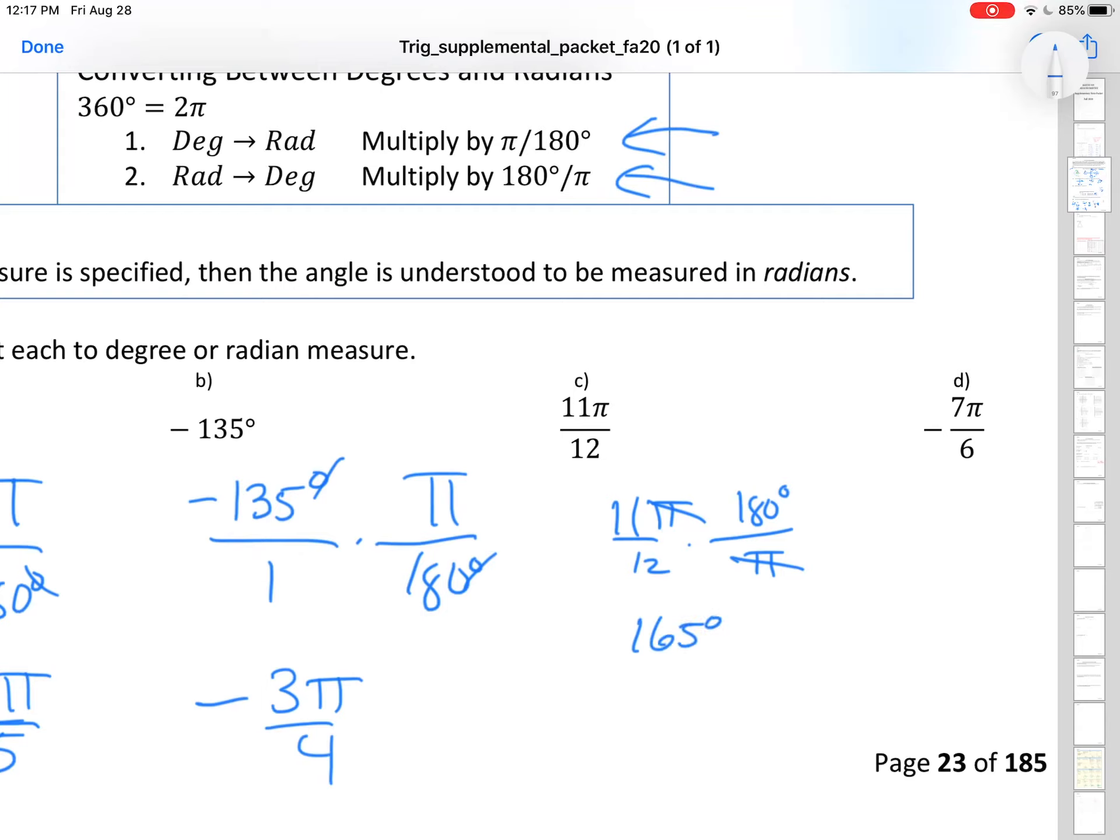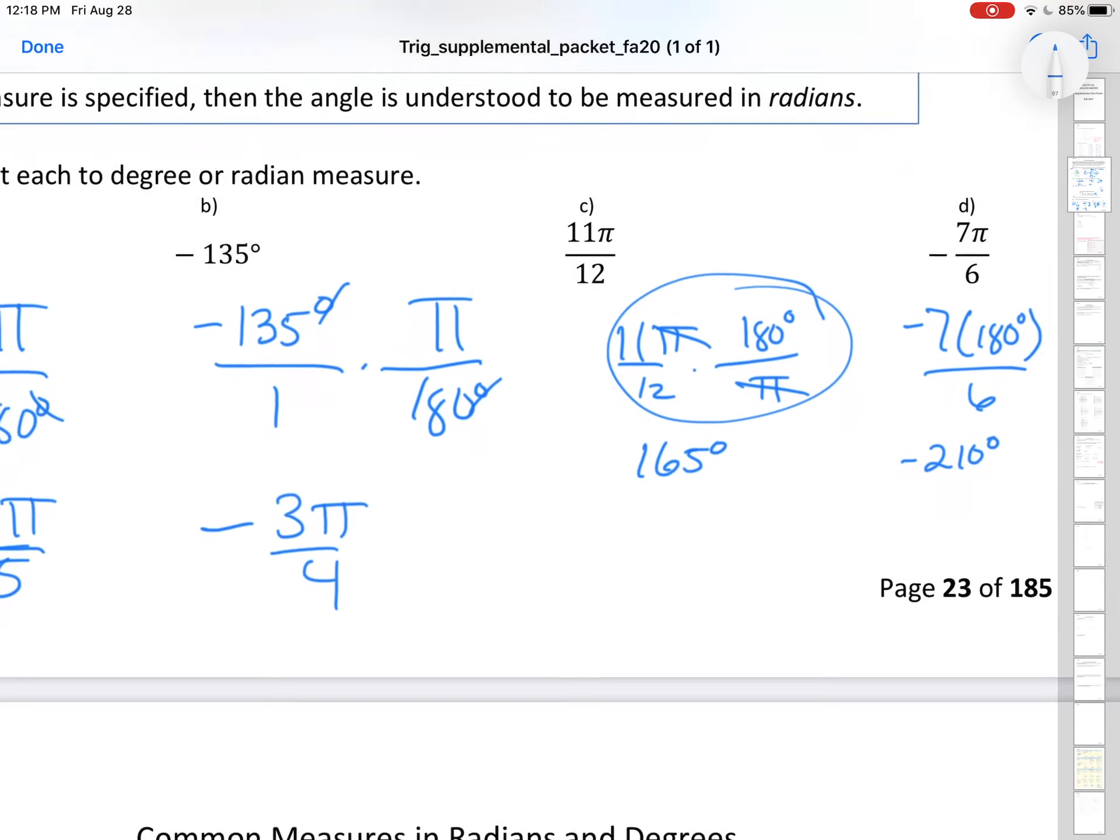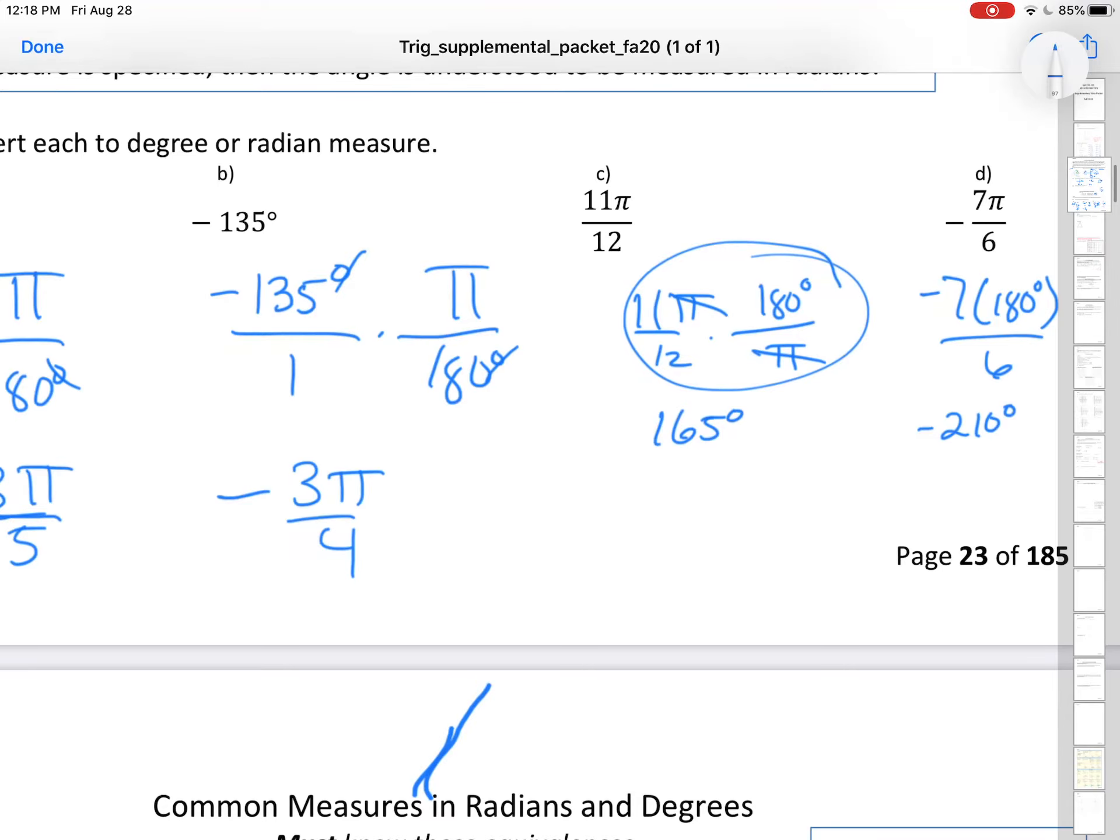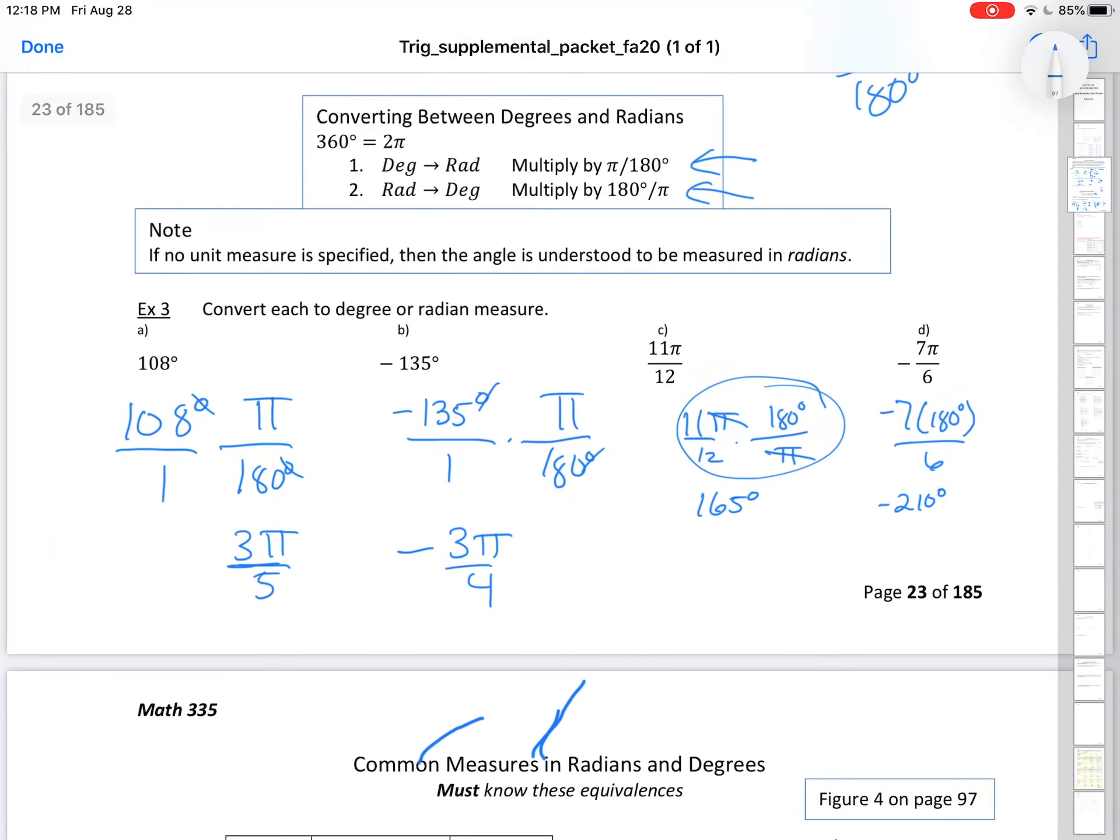If you're converting from radians to degrees, you can just replace π with 180. That's a super fast way to do it. The π's will cancel out and essentially you're replacing it with 180. What does that work out to be? Negative 210 degrees is what you will come out with on a calculator.